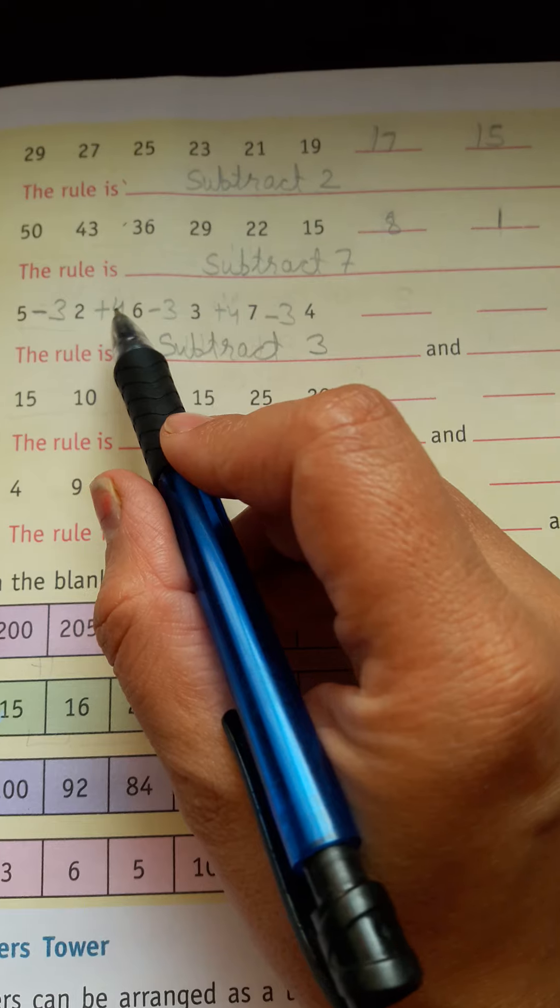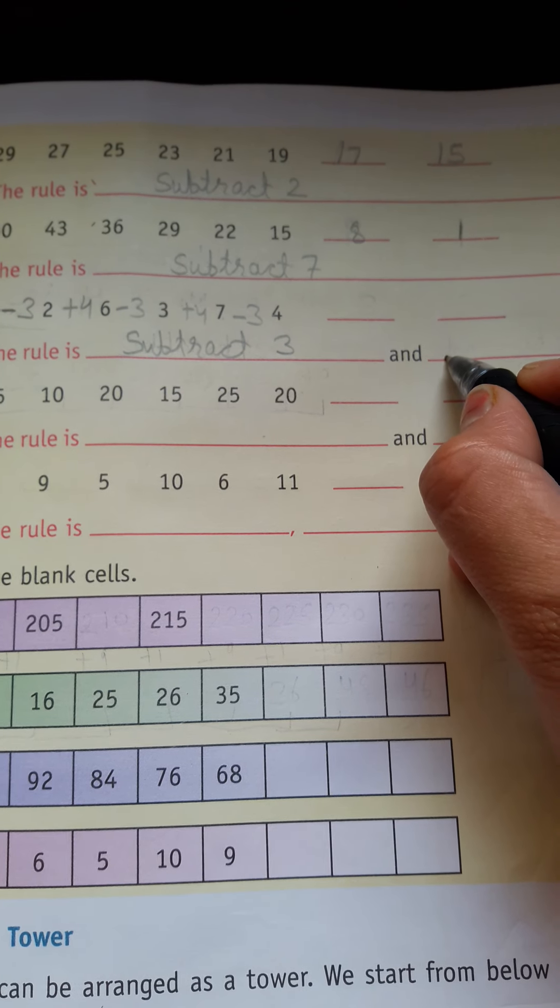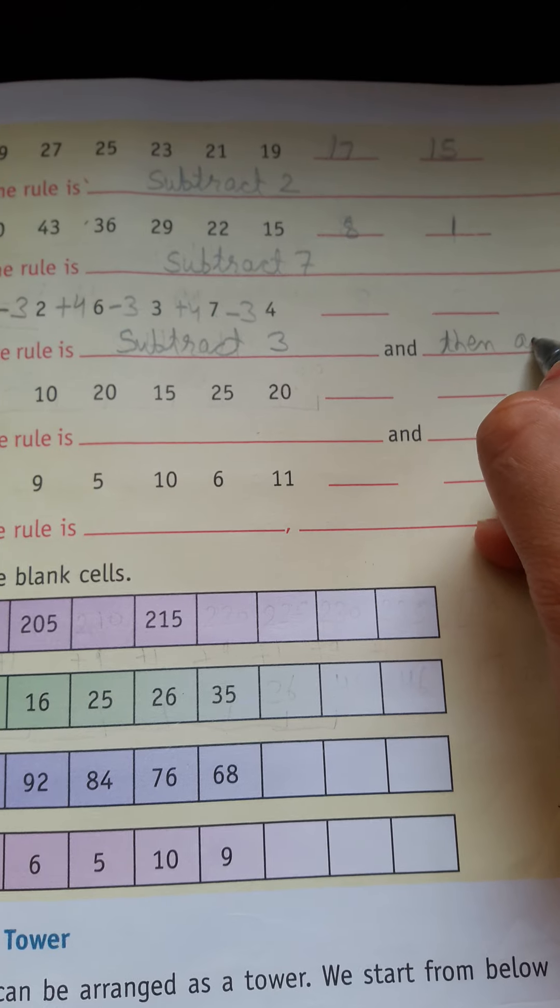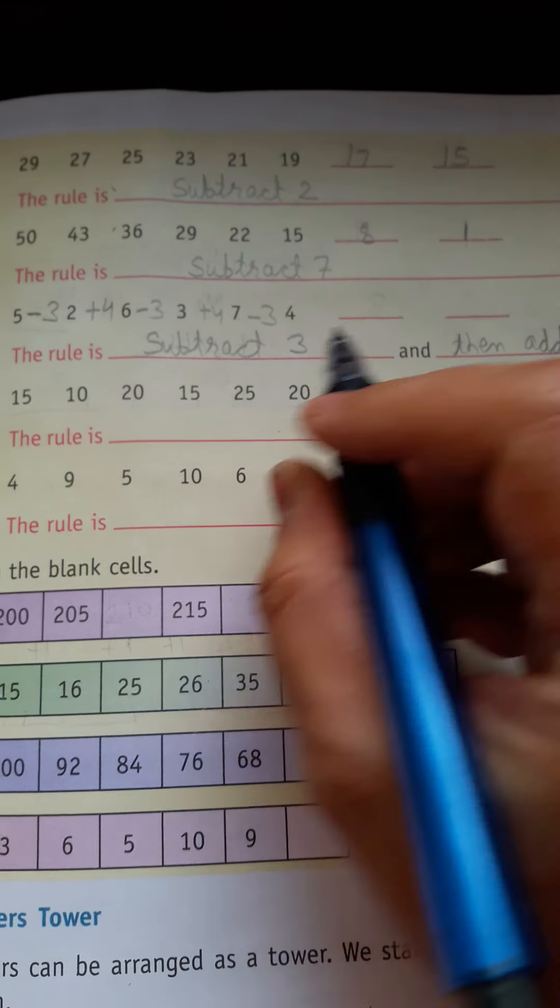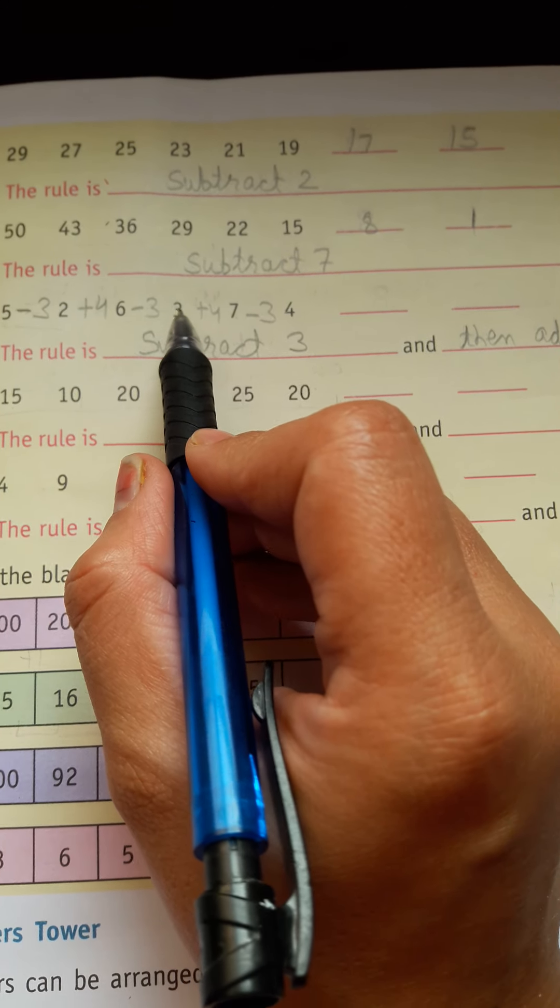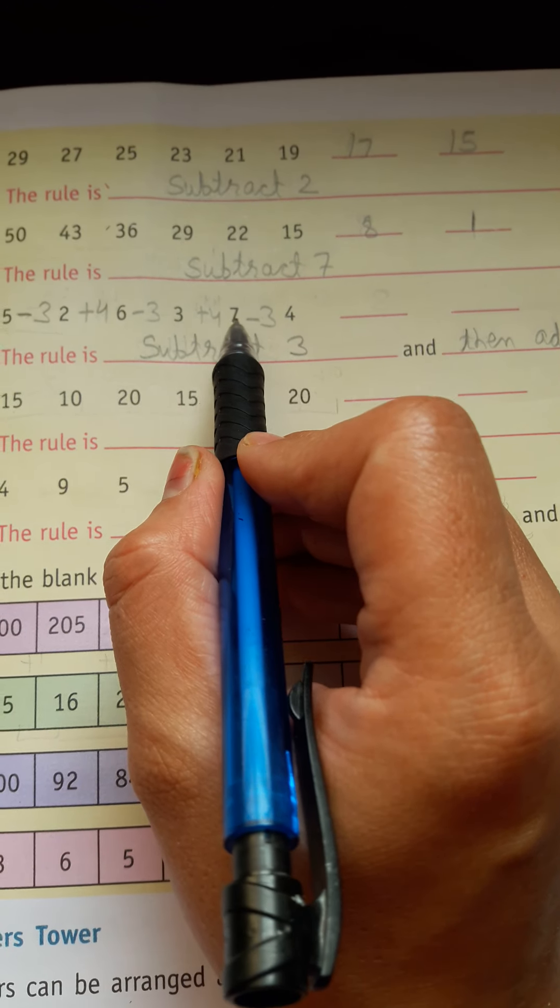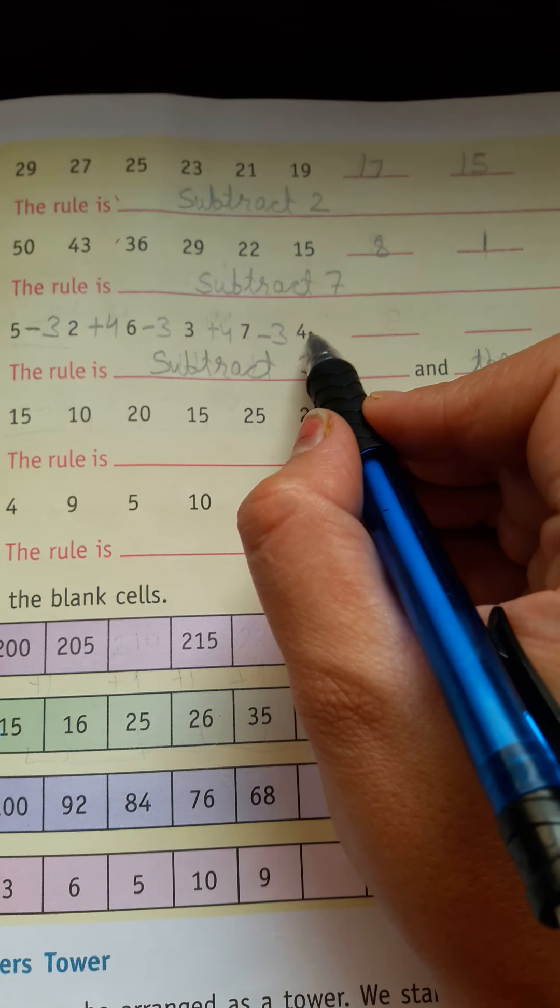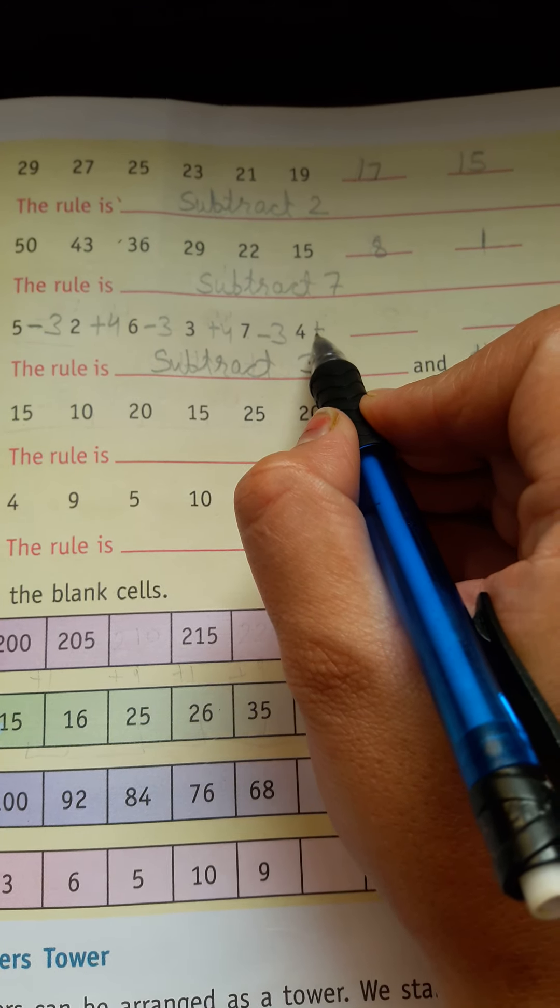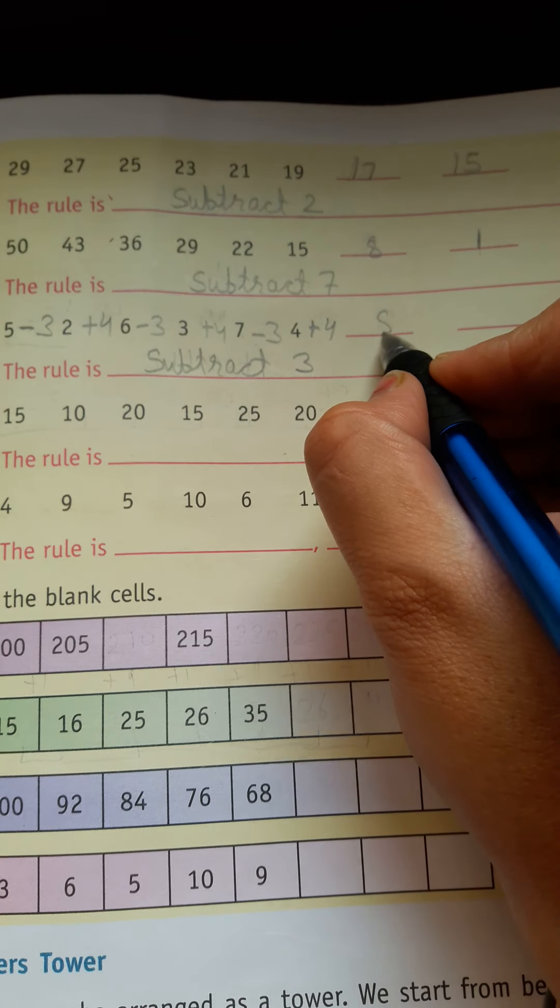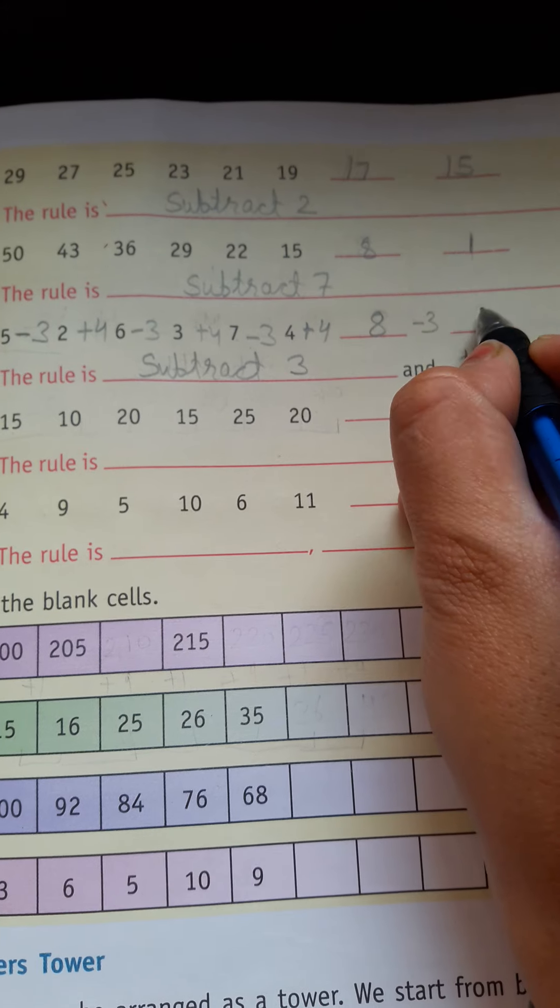Add 4: 5 minus 3 is 2, 2 plus 4 is 6, 6 minus 3 is 3, 3 plus 4 is 7, 7 minus 3 is 4. Then 4 plus 4. After minus, 4 plus will happen: 8. 8 minus 3 is 5.